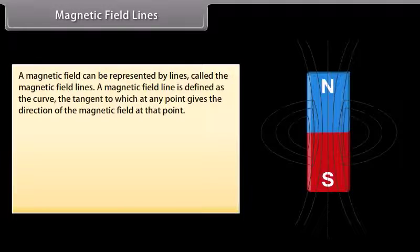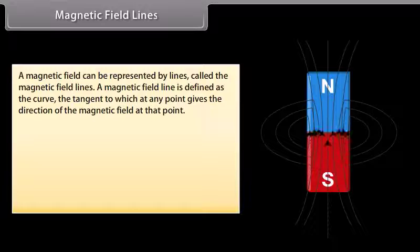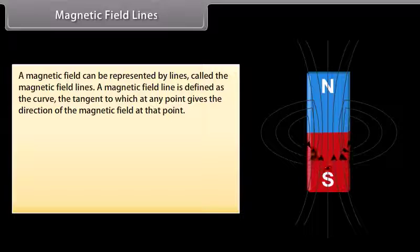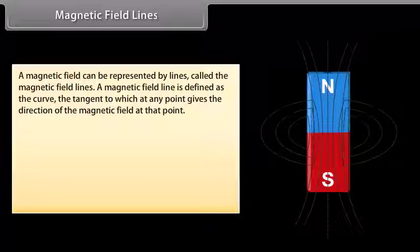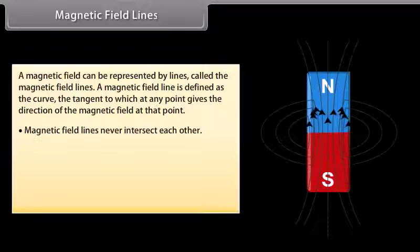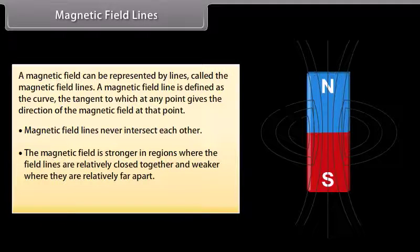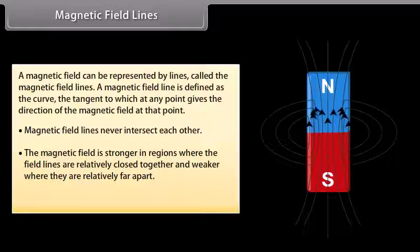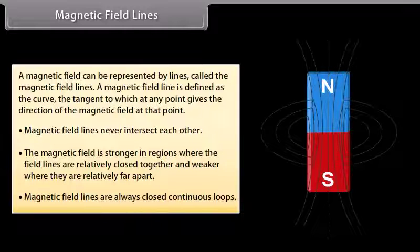A magnetic field can be represented by lines called magnetic field lines. A magnetic field line is defined as the curve, the tangent to which at any point gives the direction of the magnetic field at that point. Magnetic field lines never intersect each other. The magnetic field is stronger in regions where the field lines are relatively close together and weaker where they are relatively far apart. Magnetic field lines are always closed continuous loops.